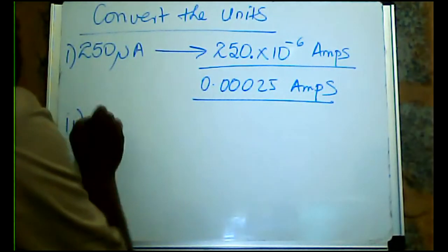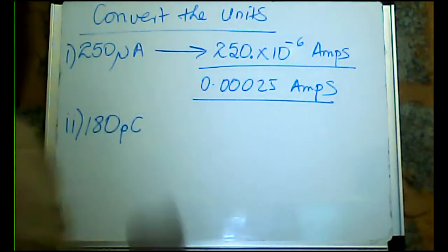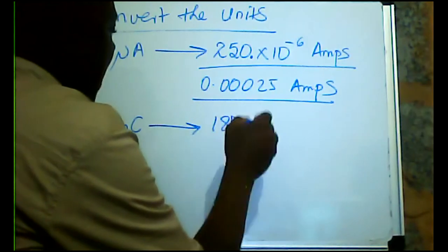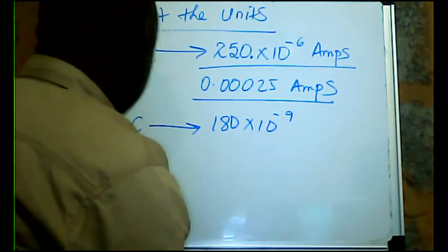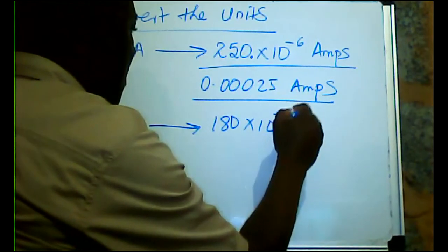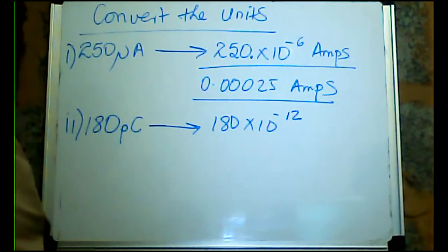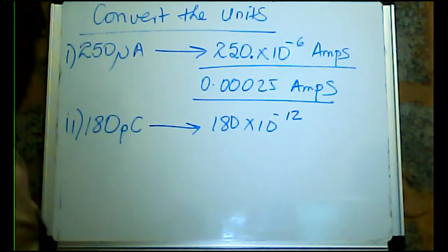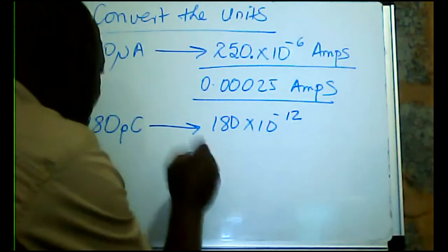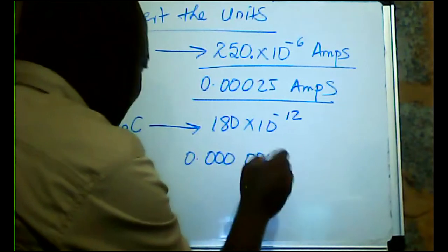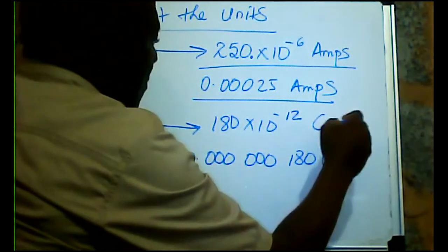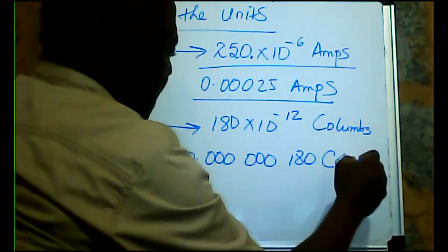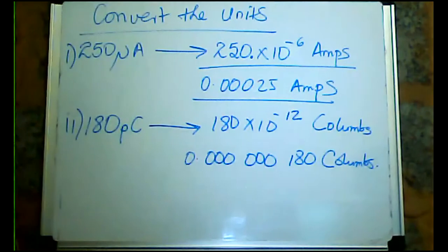Number two: convert 180 picocoulombs. Pico is 10 to the power negative 12 — milli is negative 3, micro negative 6, nano negative 9, pico negative 12. So this will be 180 times 10 to the power negative 12, which equals 0.000000000180 coulombs.